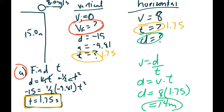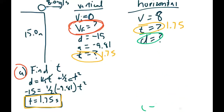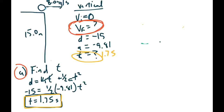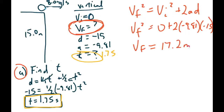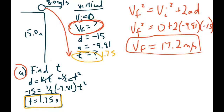The only other thing left to solve for vertically is the final velocity when the object hits the ground. Going back to vertical information, we use the VF² = VI² + 2ad formula. VI is 0, so we get VF² = 2 × 9.81 × negative 15. Taking the square root gives us approximately 17.2 meters per second. Because the object is moving downward, we say the final vertical velocity is negative 17.2 m/s.